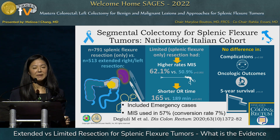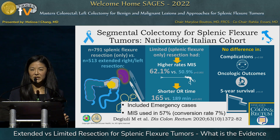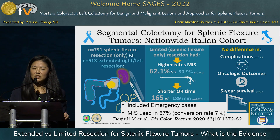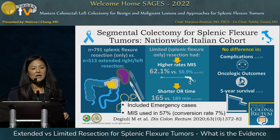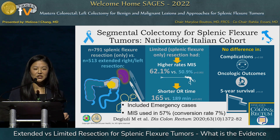A nationwide Italian cohort study published in DCR included over 1,300 patients undergoing treatment for splenic flexure cancer, comparing segmental resection to extended right and left colectomy, including emergency cases. There was no statistical difference in operative approach among the three procedures for emergency cases. Minimally invasive surgery was used in 57% of all procedures with a 7% conversion rate. Segmental colectomy was associated with a higher rate of minimally invasive surgery and shorter operative time, with no difference in complications, oncologic outcomes, or five-year survival.